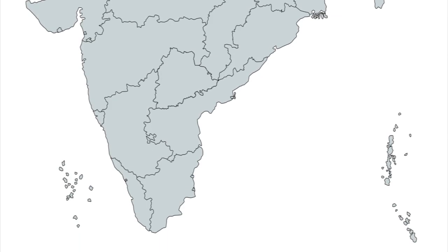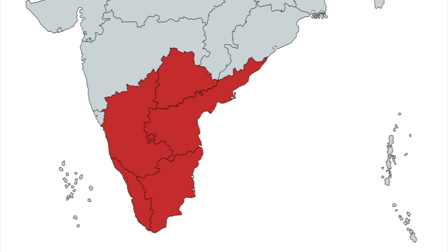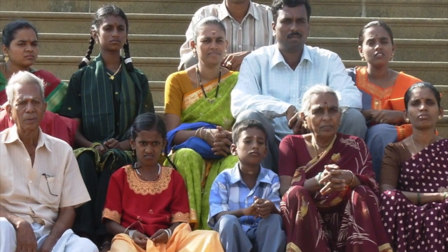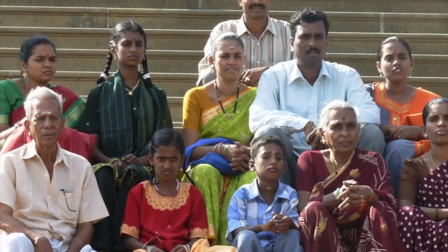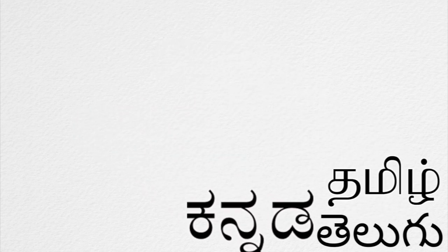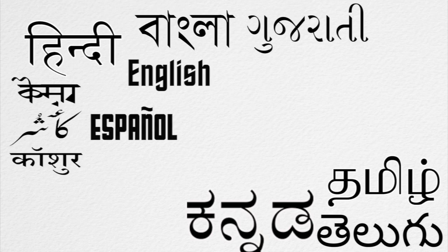Lastly, we have South India, with the states of Andhra Pradesh, Karnataka, Kerala, Tamil Nadu, and Telangana, and it is incredibly distinct from the north. These states are of a cultural group called the Dravidians, who speak, unsurprisingly, Dravidian languages — including the aforementioned Tamil, Telugu, Kannada, and Malayalam. The Dravidian languages are in their own separate category, completely separate from Hindi, Bengali, Gujarati, Kashmiri, etc., which are Indo-European languages, like English, Spanish, or Russian.